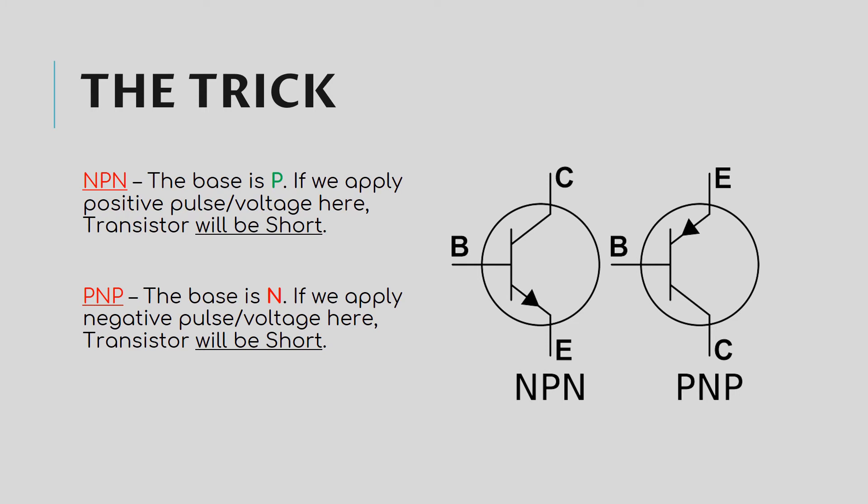Similarly the PNP transistor, the base is N or negative, so if we apply a negative voltage then only the PNP will be turned on, otherwise it will be completely turned off or switched off. Just a reverse logic. Now I'll show you how transistor acts as a switch in practical circuits. This can help you in making circuits on your own.